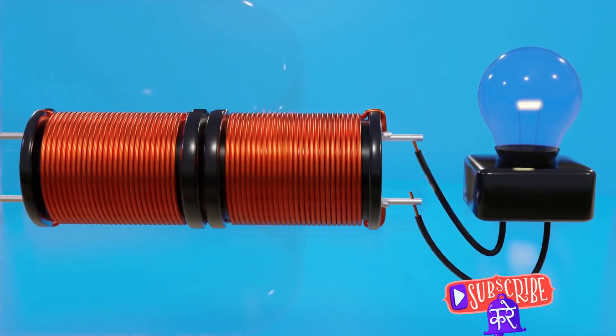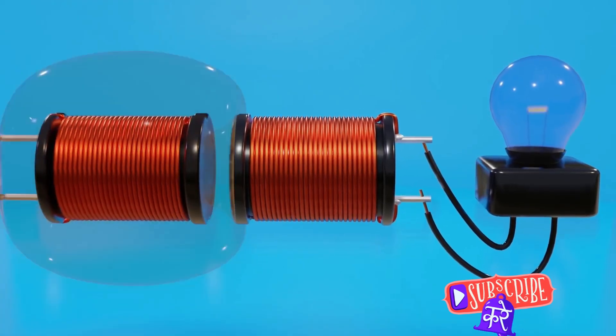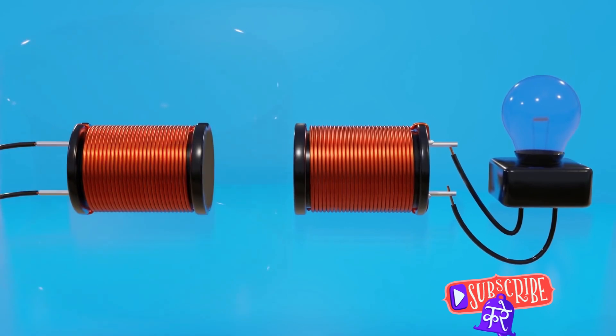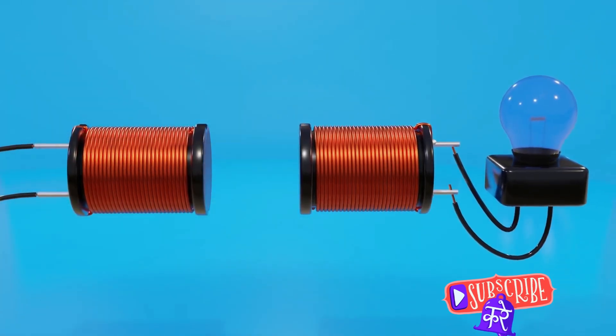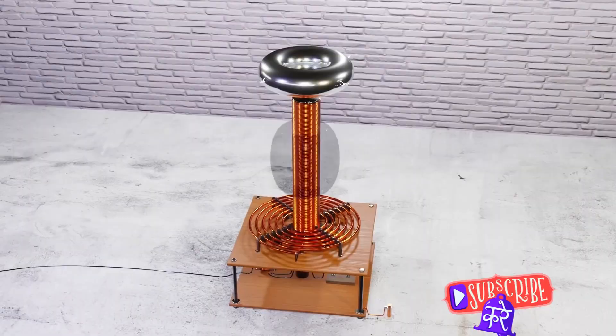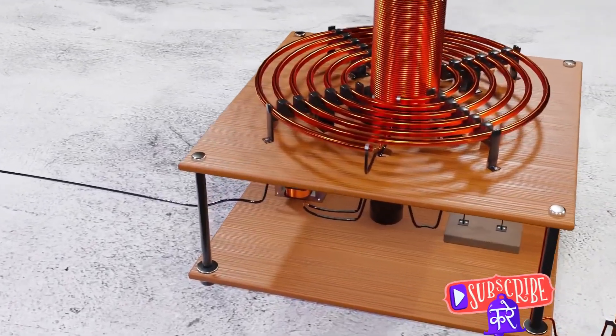Next up is the primary coil. This component acts as the first step in the transformation process. It's made up of only a few turns of thick wire and is connected to the power source. When electricity from the power source enters the primary coil, it creates a magnetic field around the coil.